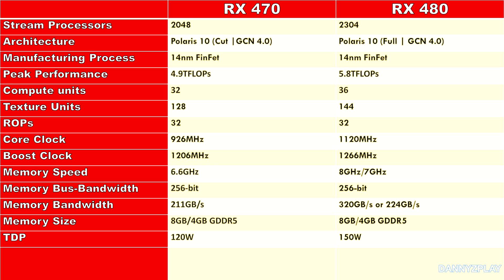For texture units, the RX 470 has 128 while the RX 480 is boasting 144 units. They both have the same amount of ROPs at 32. The RX 470 has a core clock of 926 MHz and a boost clock of 1206 MHz, while the RX 480 has a core clock of 1120 MHz and a boost clock of 1266 MHz. The RX 470's memory is clocked at 6.6 GHz while the RX 480's memory is clocked at 8 GHz or 7 GHz depending on which variant you buy. They both have the same memory bus bandwidth at 256-bit, with memory bandwidth of 211 GB/s for the RX 470 and 320 GB/s or 224 GB/s for the RX 480. Both cards come in 8 or 4 GB variants, and the RX 470 is more efficient at 120W TDP while the RX 480 has a TDP of 150 watts.